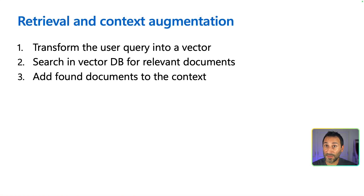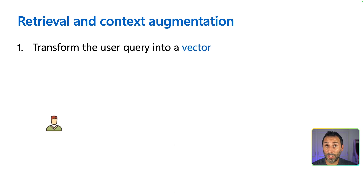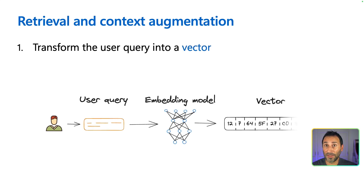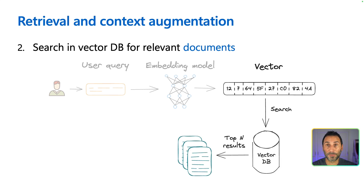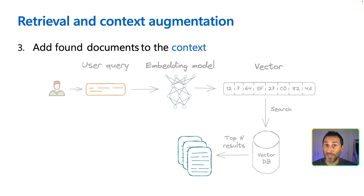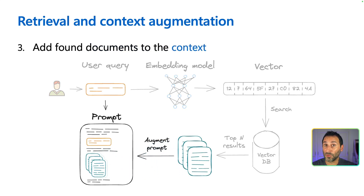Once you've built your knowledge base, you can perform the retrieval and context augmentation process, which is done in three steps. First, we transform the user query into a vector by sending it to the same embedding model used while creating the knowledge base. After that, we use the vector to search our vector database for relevant documents and pick the N best results. Finally, we take the text from the most relevant documents as well as the initial user question and use it to craft a prompt — something like: answer the user's question using the provided documents. Then you send the prompt to the LLM to get your answer.